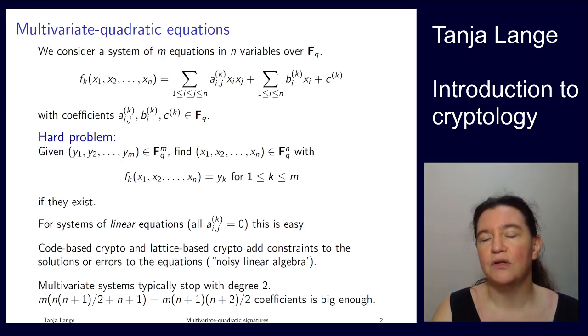Except for Niederreiter, not any pre-image is valid, but you're having further constraints. So finding one pre-image is easy, but finding the pre-image which has low weight, has weight less than or equal to some parameter t, that is the hard problem.